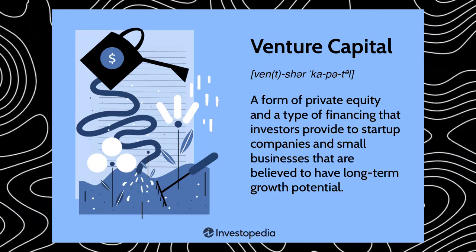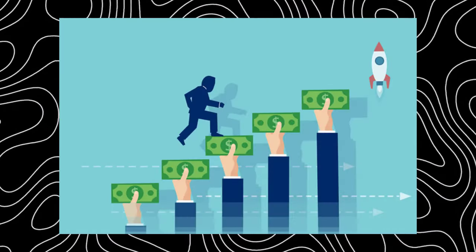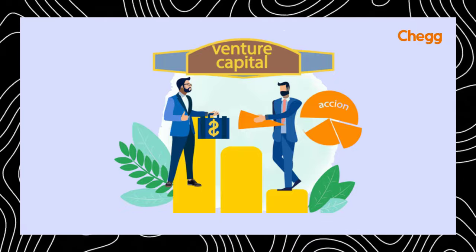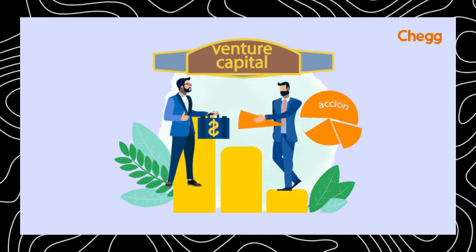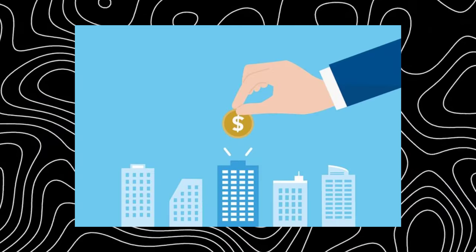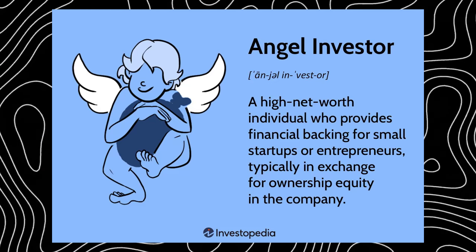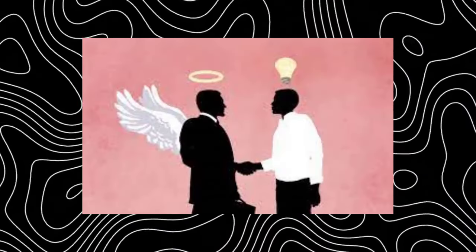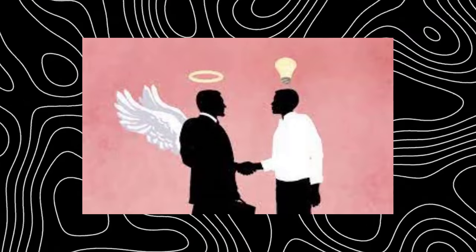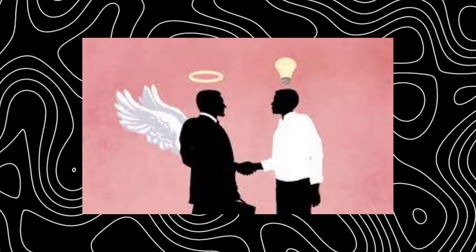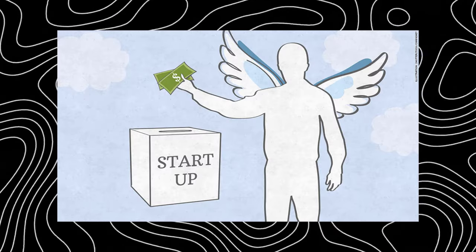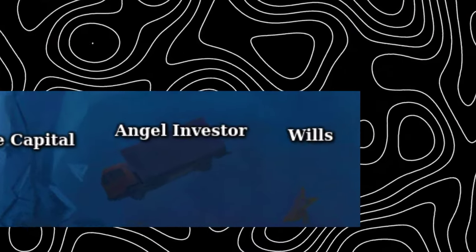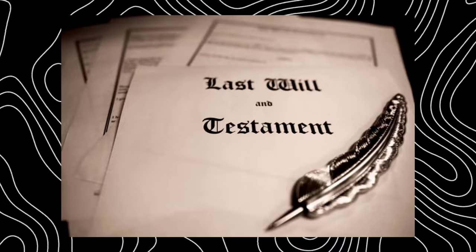Venture capital: also known as VC, is a form of private equity financing that investors provide to startups or small businesses with long-term growth potential. A small business may seek outside funding from external sources to help grow its products or services. Angel investors: these are wealthy individuals who provide capital for startups. Unlike venture capital — which is more of a private organization — angel investors are personal entities seeking initial ownership. They tend to appear during the initial growth phase, often as close contacts like friends, family, or mentors.